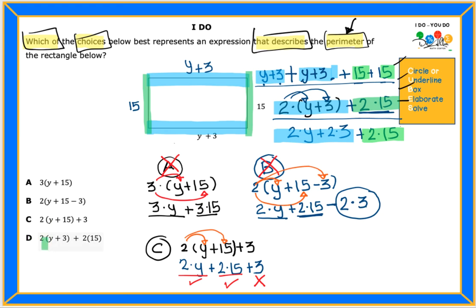Now let's check D. And for D, we have 2 that multiplies y plus 3. And that looks like this section here on the right side. Can you see it? I'm highlighting it in green. I'm going to use yellow highlighter. And then they have plus 2 times 15. And that's what we have here. 2 times 15. So our answer in this case is going to be letter D.